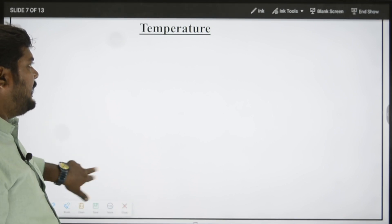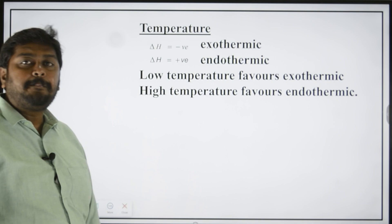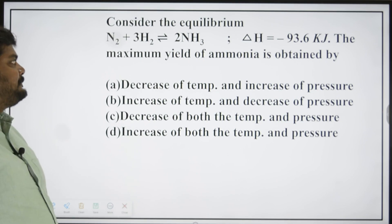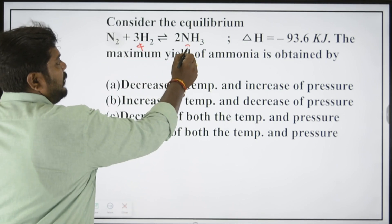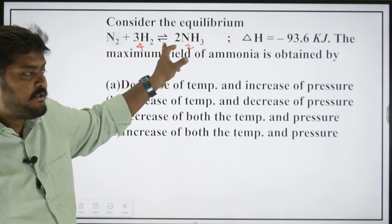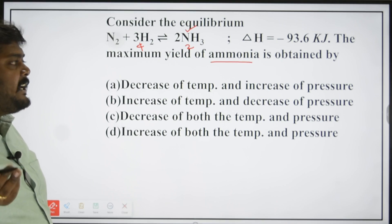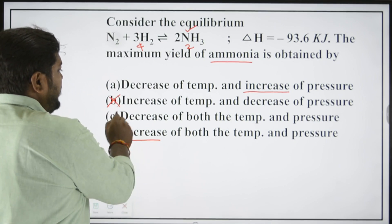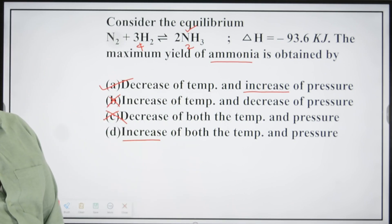Temperature depends on del H. If del H is negative, the reaction is exothermic, and low temperature favours the exothermic reaction. High temperature favours the endothermic reaction. For the formation of ammonia, del H is negative — 4 moles of reactants and 2 moles of products. To get the maximum yield of ammonia, you need to increase pressure — del n is negative, favours forward reaction. For temperature, since it is exothermic, low temperature favours it. So the answer is option A: low temperature and high pressure.